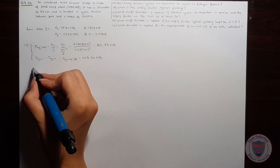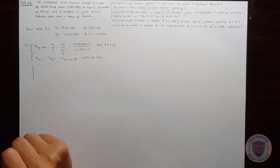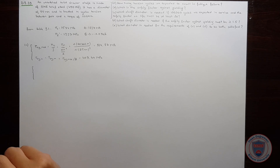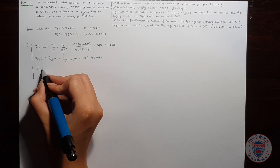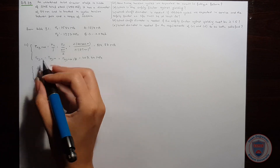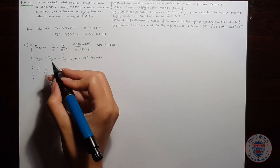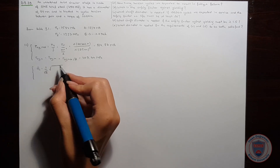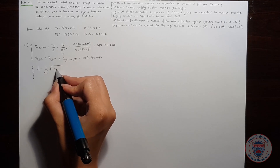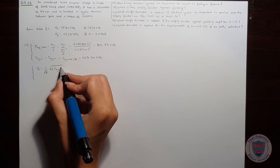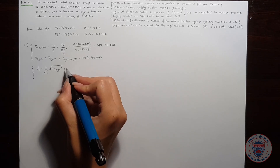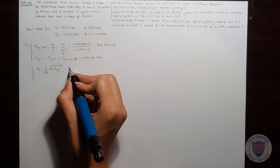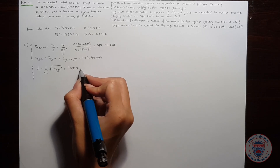Now we find the equivalent stress amplitude and the equivalent mean stress. The equivalent stress amplitude equals 1 over the square root of 2 times the square root of 6 times tau_xy_a squared, since there are no normal stresses, and it equals 705.7 MPa.